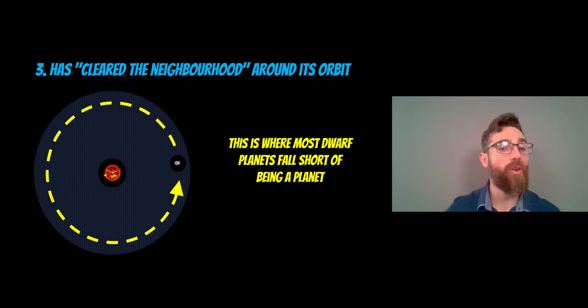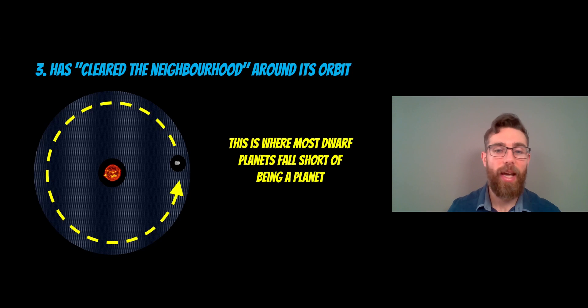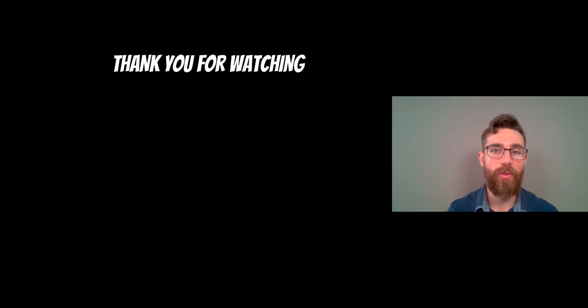A body has to hit all three criteria to be classified as a planet. This is one of the reasons why Pluto is not a planet, and why some of the minor or dwarf planets in the asteroid belt are not planets either. Thank you for watching, and if you enjoyed this you can check out some of the other videos.